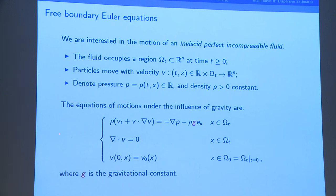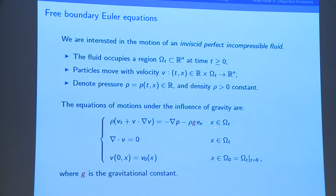The fluid is incompressible, expressed by the divergence-free condition. I will look mostly at the Cauchy problem, specifying initial data: the initial velocity v, which has to be incompressible, and the initial domain. Now the system is not closed yet, because p is recovered from v, at least inside the domain, by the divergence-free condition. What one needs to specify is how the domain evolves — how does the boundary move?